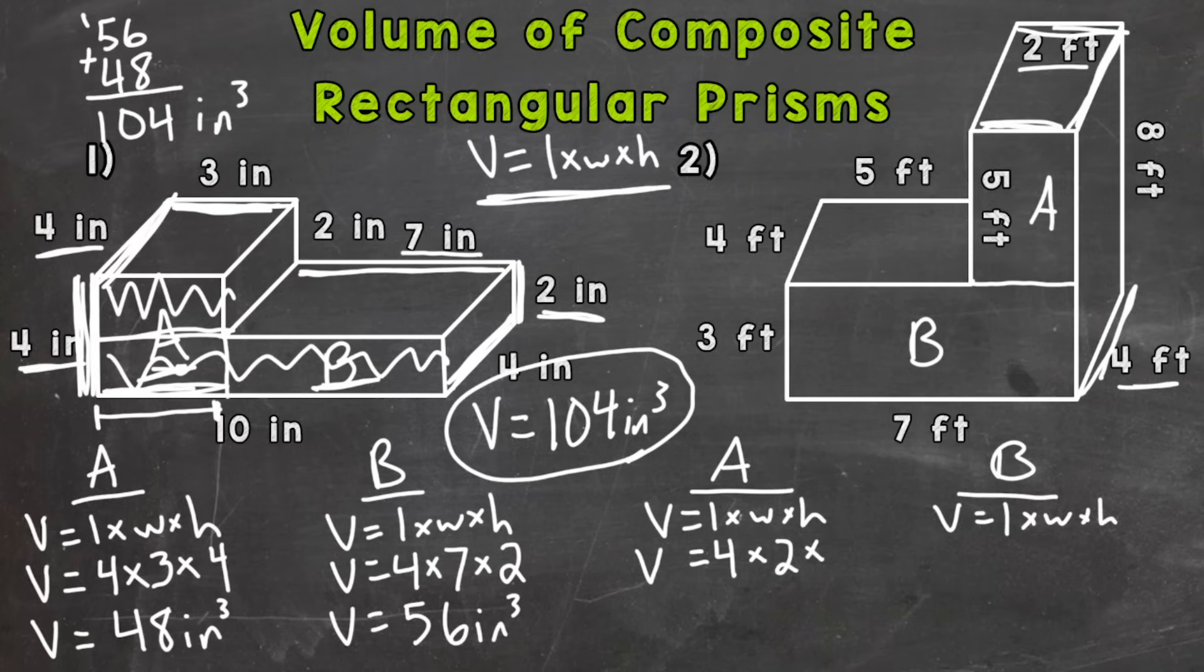And then the height, we don't want to use this eight over here. We don't want to use that eight because that's the whole height of A and B. We just want A, which is going to be this five feet here. So we get to four times two is eight times five is 40 cubic feet.